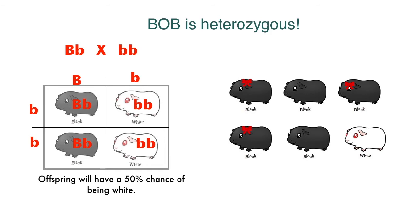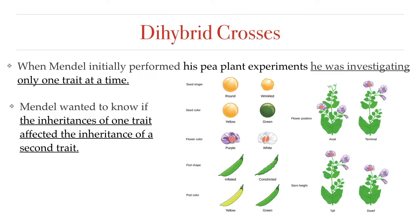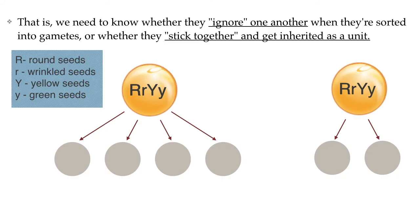Now let's talk about dihybrid crosses. When Mendel initially performed his pea plant experiments, he was investigating only one trait at a time. Mendel's law of segregation would let him predict how a single trait associated with a single gene is inherited. But later on, he wanted to predict the inheritance of two traits associated with two different genes — for example, instead of just looking at seed shape by itself and seed color by itself, he wondered if the inheritance of one trait would affect the inheritance of the second trait. To make an accurate prediction, he needed to know whether the two genes are inherited independently or not.